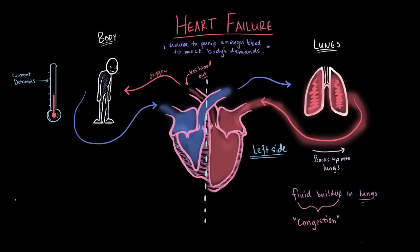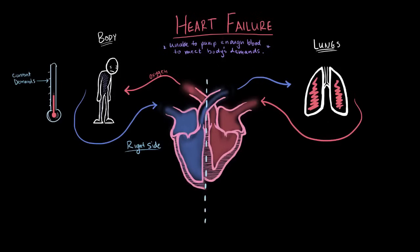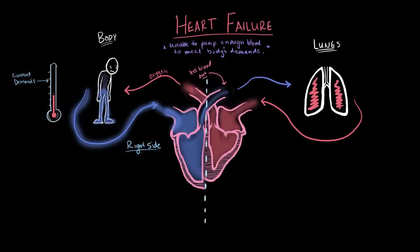With right-sided failure — and again, this can happen with either systolic or diastolic — since the right side pumps blood to the lungs and receives blood from the body, when it doesn't pump well to the lungs, we get that traffic jam situation again, but this time blood gets backed up into the body. Patients with right-sided failure might start getting fluid buildup in their feet, legs, and abdomen — congestion, but in the body instead of the lungs.